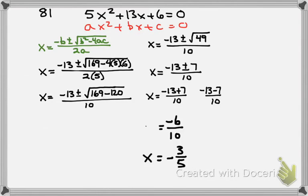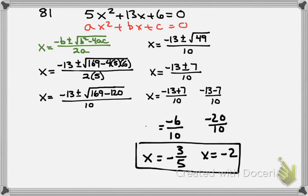And then here I'd have negative 20 divided by 10, so that's going to be negative 2. And those are my two solutions for number 81.